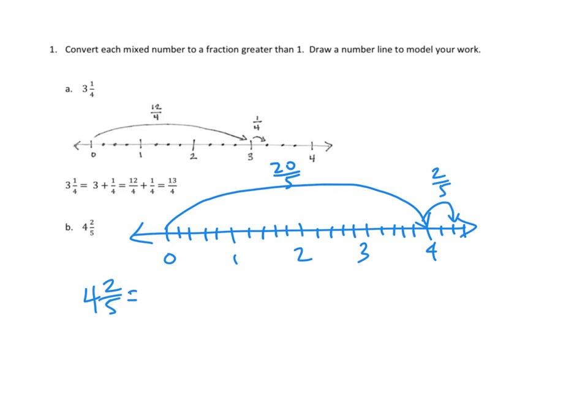That allows me to write my number sentence here below, which is that four and two-fifths is the same as four plus two-fifths. Then we express four in terms of fifths, and that was twenty-fifths. So that's twenty-fifths plus two-fifths. Now everything's in fifths, so I can add these two together, and twenty plus two is twenty-two-fifths. So that's our improper fraction - four and two-fifths is the same as twenty-two-fifths.